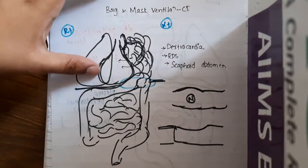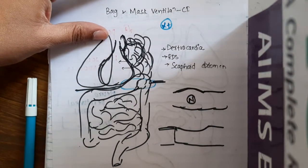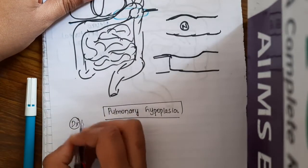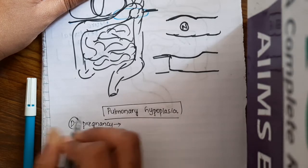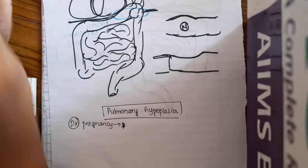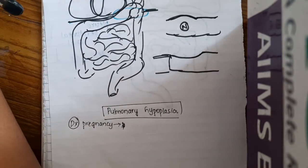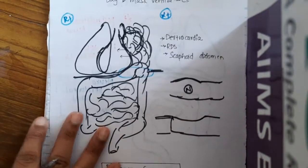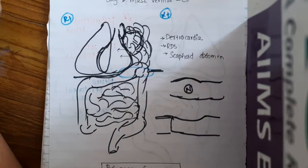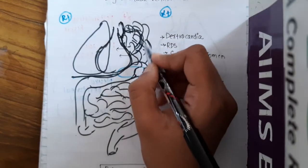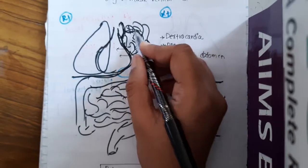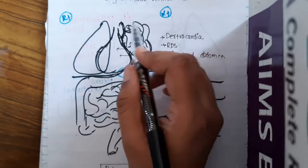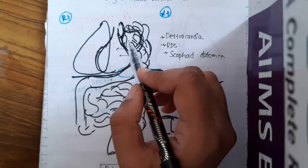For diagnosis, this condition can be diagnosed during pregnancy itself. When diagnosed in pregnancy, the mother will have polyhydramnios. After delivery, we can diagnose this with the help of a chest X-ray. On chest X-ray, you will see the presence of bowel loops in the thorax. The gastric bubble, which is normally present in the abdomen, will be present in the thorax on chest X-ray.